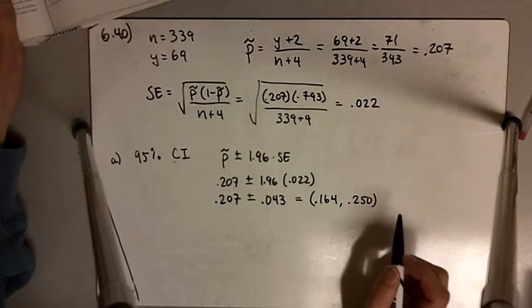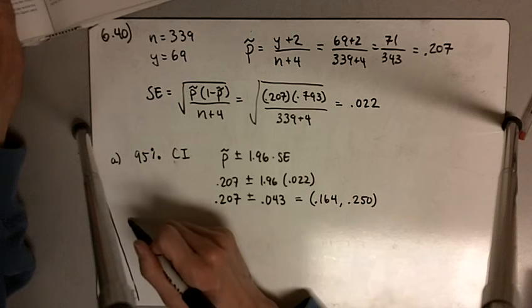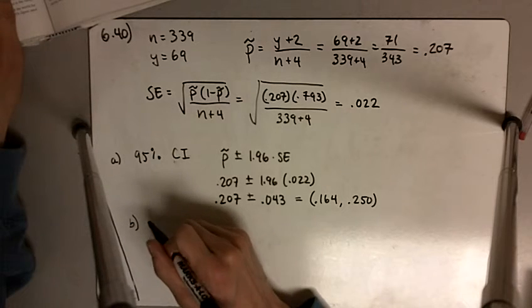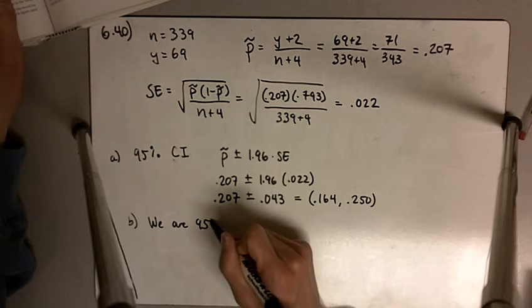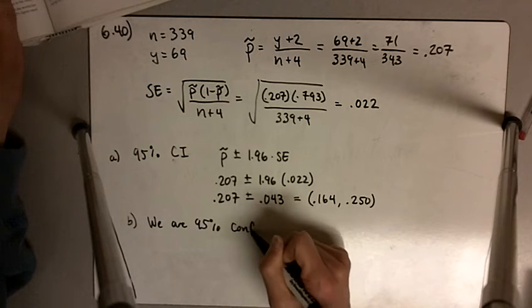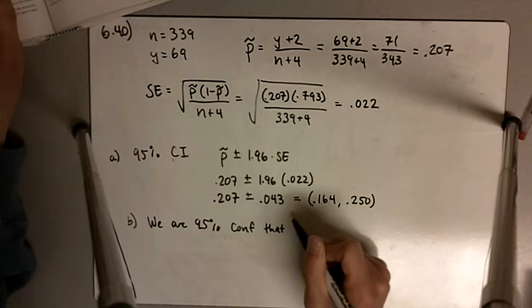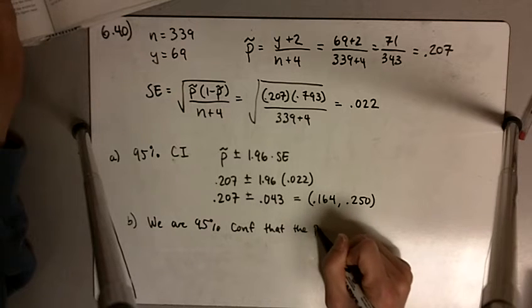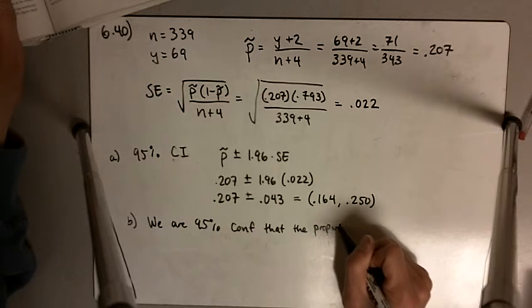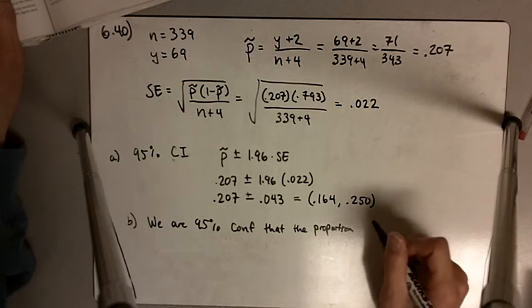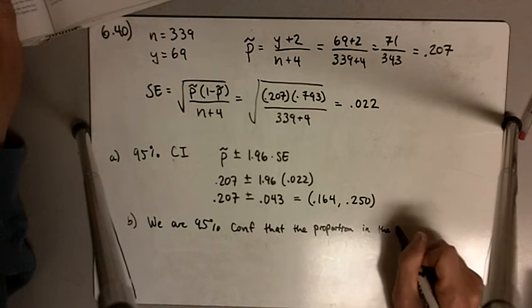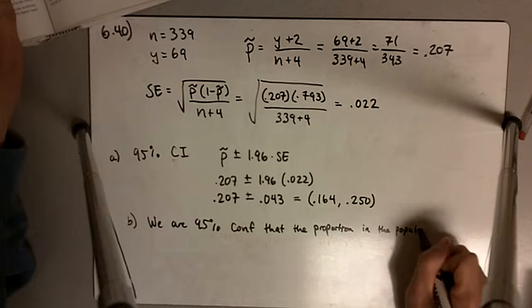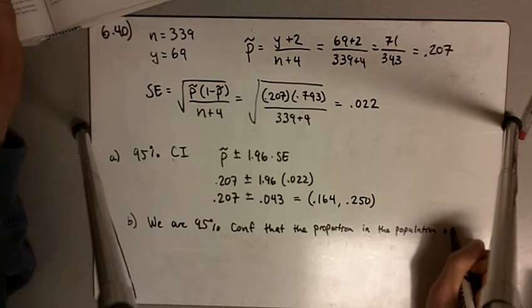And it says interpret the confidence interval from part A. So our interpretation is: we are 95% confident that the proportion in the population of infants